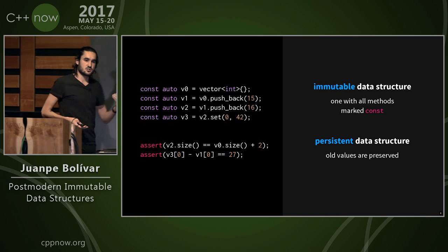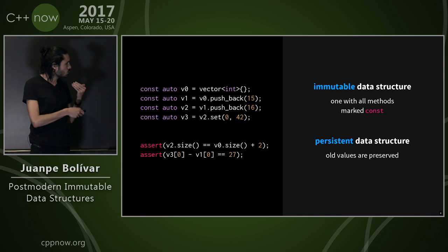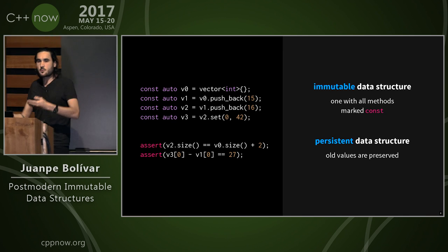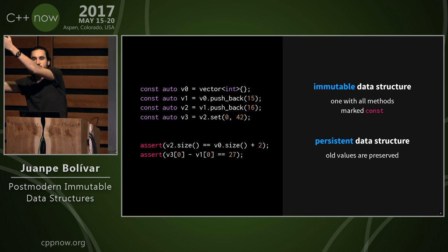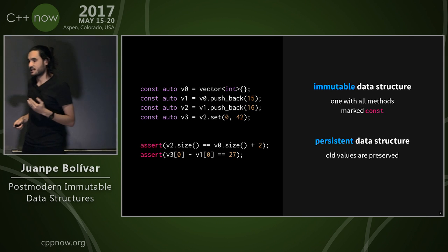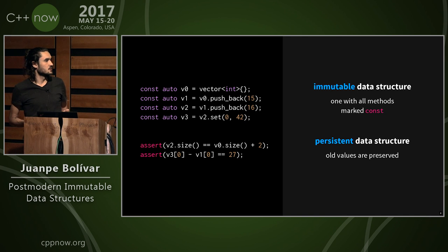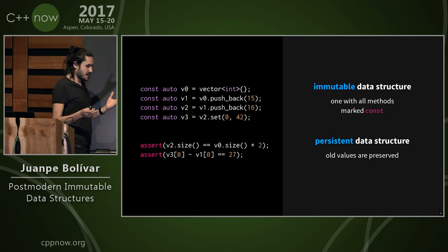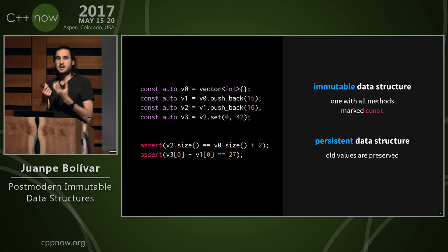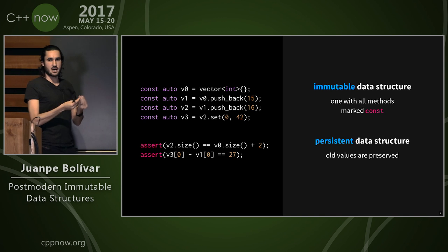We can compare the past with the present, branch the past, and create new versions of the future. These properties are really interesting, especially for interactive programming. Being able to compare the past with the present means that change becomes a first-class value of our program that we can reason about.